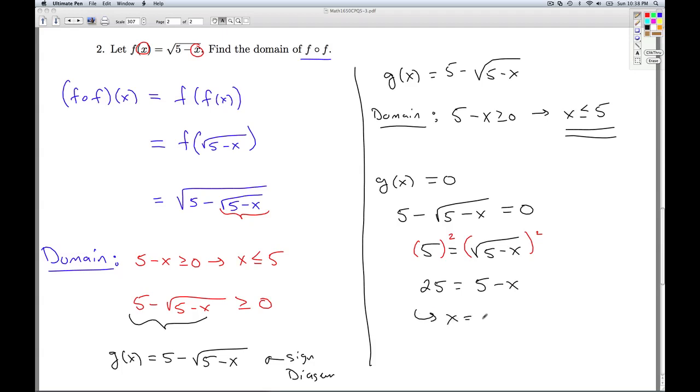So when the dust settles, you get x equals negative 20. So on our sign diagram, we're going to have the portion of the real number line less than or equal to 5. And the only number of interest in that region is going to be negative 20.